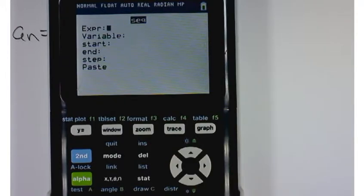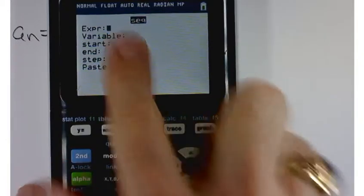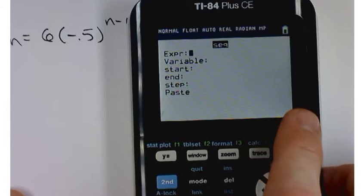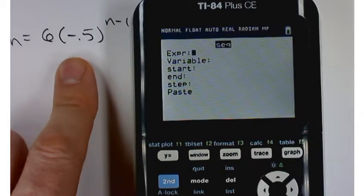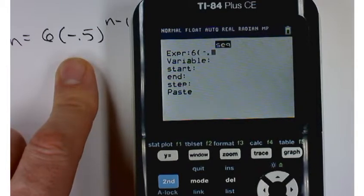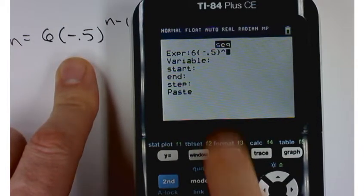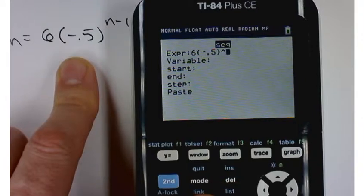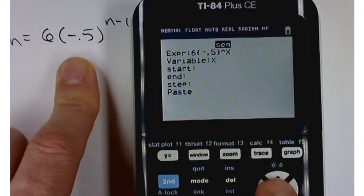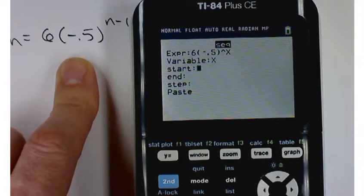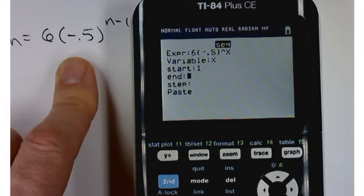If your calculator's operating system is up to date, that is, you have math print available, you should get something like this, a little menu-driven expression. So it's going to be six and then parentheses, negative point five, raised. I'm going to use an x here. The variable is x, start at one, end at five, step of one.